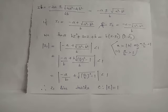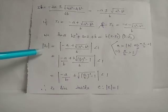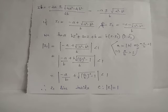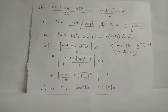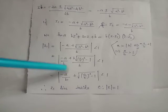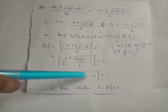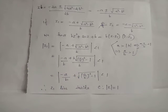For z₁ = (−a + √(a² − b²))/b, evaluating |z₁| gives |z₁| < 1. This is because since a > |b| is given, we have a/b > 1, so −a/b < 1. Evaluating |z₁| gives −a/b + √((a/b)² − 1), which is surely less than 1. Thus z₁ is a pole lying inside the unit circle.